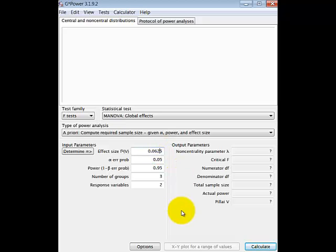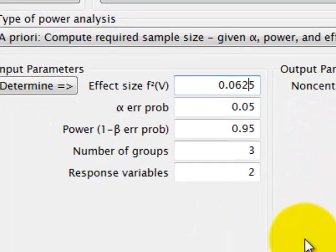So the G power software will go ahead and suggest a medium effect size. And that is 0.06, not 0.6, 0.06. Now effect size is the amount of variance that you can explain. In other words, it kind of tells you how good your model is. And it changes from test to test.